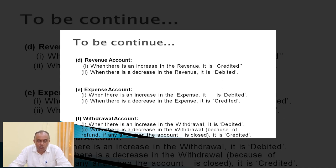For expenses, as per the modern approach: when there is an increase in expenses or losses, it is debited; when there is a decrease in expenses or losses, it is credited. For withdrawal account, the last account in the modern approach: when there is an increase in the withdrawal it is debited; when there is a decrease in the withdrawal it is credited.